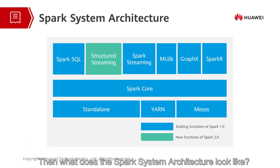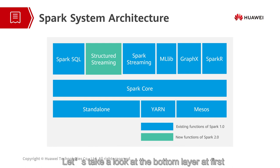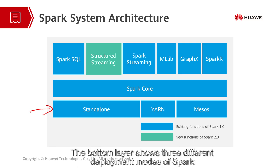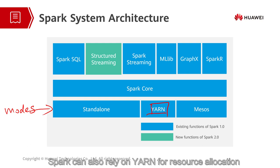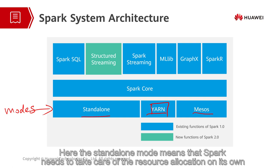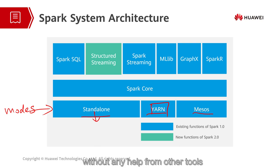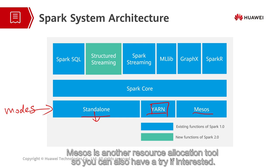Then what does the Spark system architecture look like? Here you can see a graph, and we can roughly divide it into three layers. The bottom layer shows three different deployment modes of Spark. YARN is known as the unified resource negotiation framework in Hadoop. Spark can also rely on YARN for resource allocation. But in addition to that, Spark also supports standalone and Mesos methods. The standalone mode means that Spark needs to take care of the resource allocation on its own without any help from Hadoop, so it is not recommended if there is a huge Spark cluster or if the computation is very heavy. Mesos is another resource allocation tool, so you can also have a try if interested.